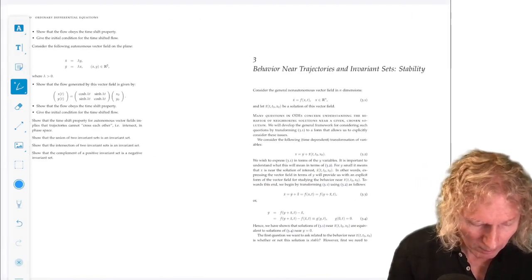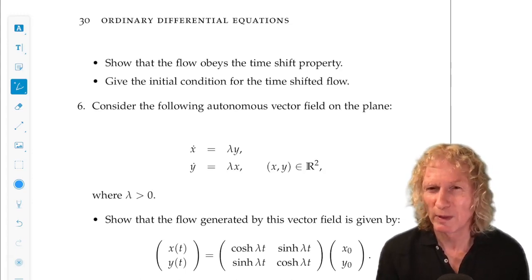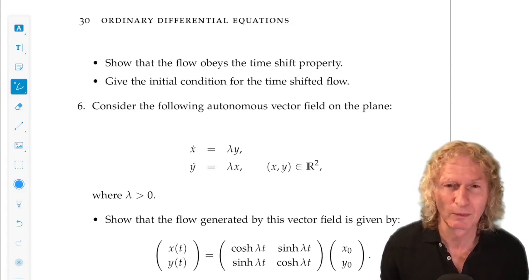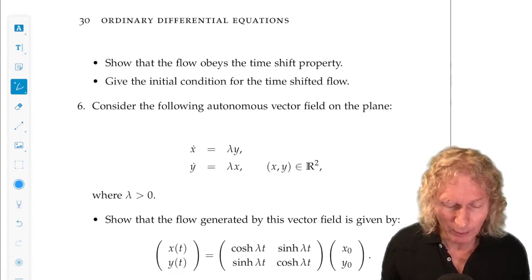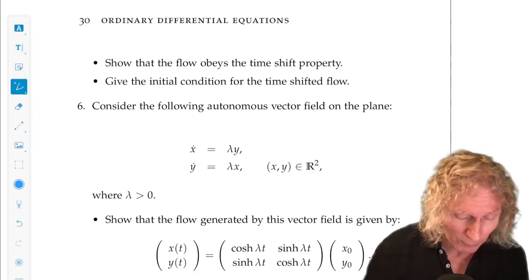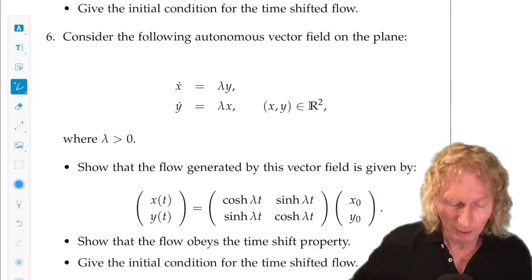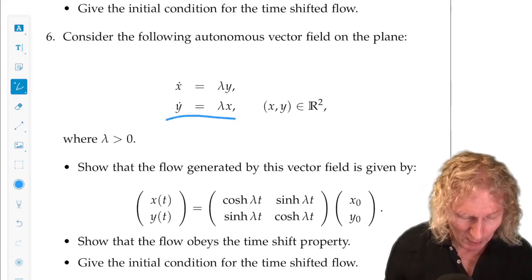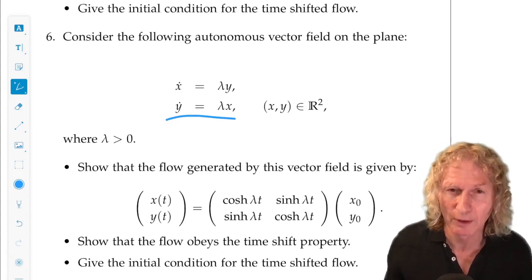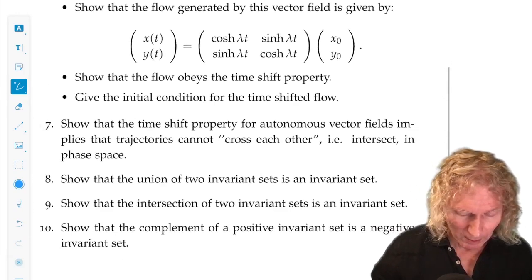And then I asked you some simple things like, does the flow obey the time shift property? We proved that abstractly. We did it for a one-dimensional example, x dot equals ax. The solution is x naught e to the at. But I want you to verify it and verify these two bullet points here. Similarly, for a very related problem, I want you to do exactly the same thing. Compute the flow and show that it obeys the time shift property and find the initial condition for the time shifted flow. x naught, y naught is just the initial condition we start with, but for the time shifted flow.